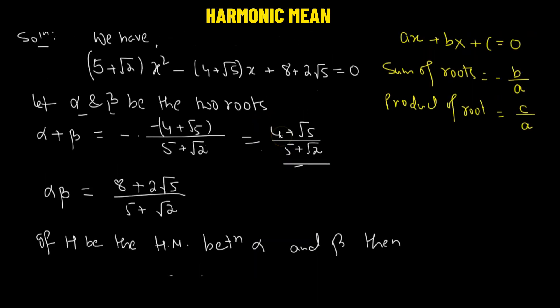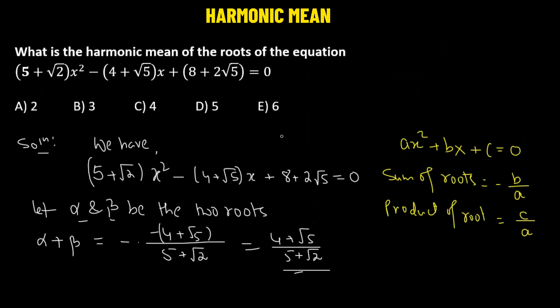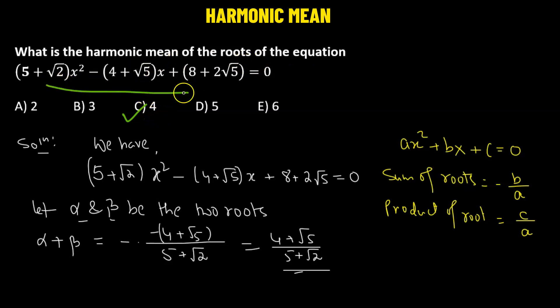Checking our options, option C gives us the value 4. So the harmonic mean of the roots of the given quadratic equation is 4, which corresponds to option C.